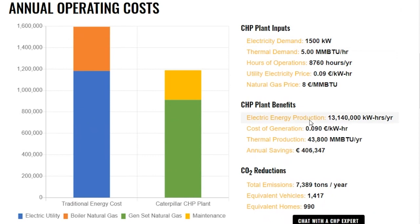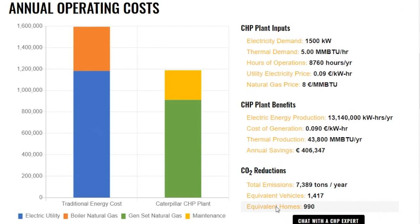If we navigate over to the right side, we have our CHP plant inputs that we provided up at the top. The next section down is our CHP plant benefits. I want to direct you to this annual savings: 406,000 euros is the estimated annual savings for this CHP site for 1,500 kW. I also want you to notice this CO2 reduction — the total emissions reduction is 7,389 tons per year, equivalent to 1,417 vehicles or 990 homes. Quite a big savings in both financial savings and emission reduction.